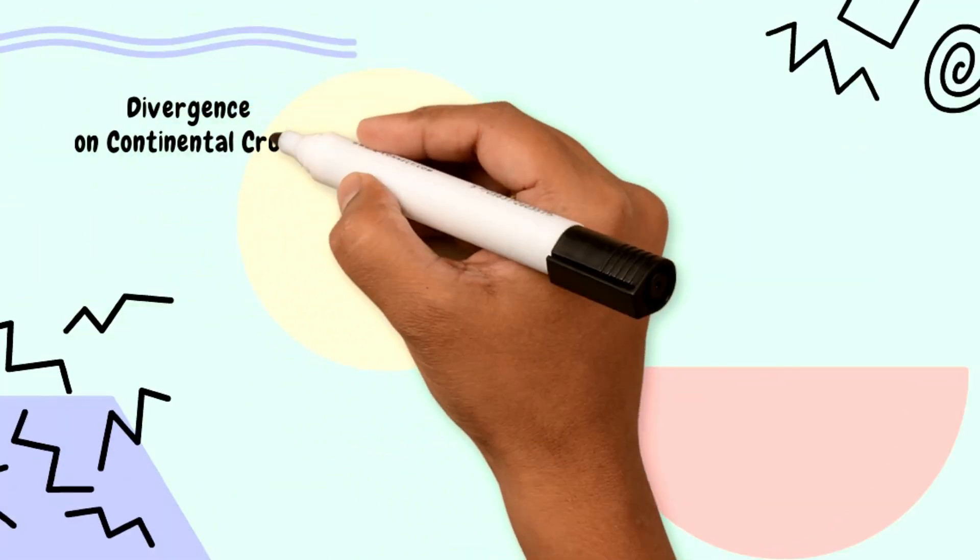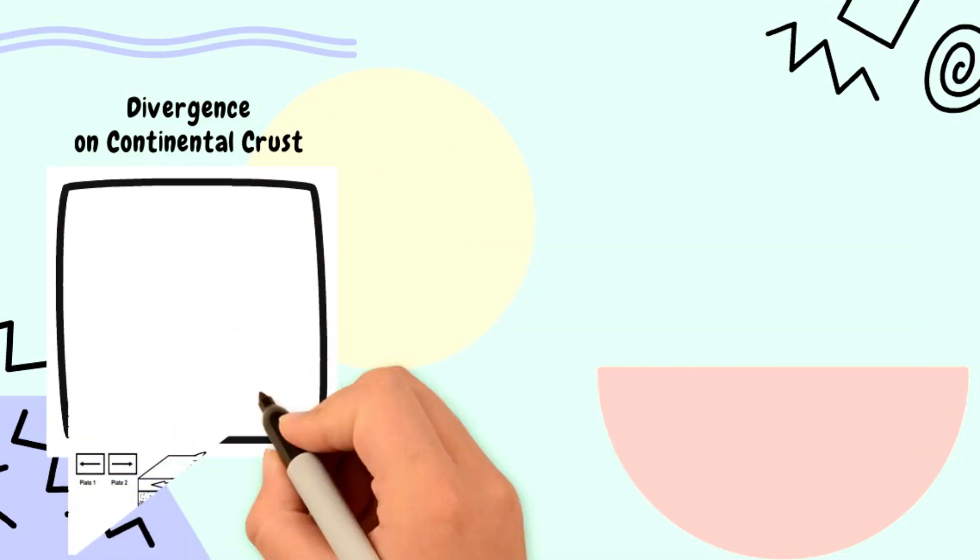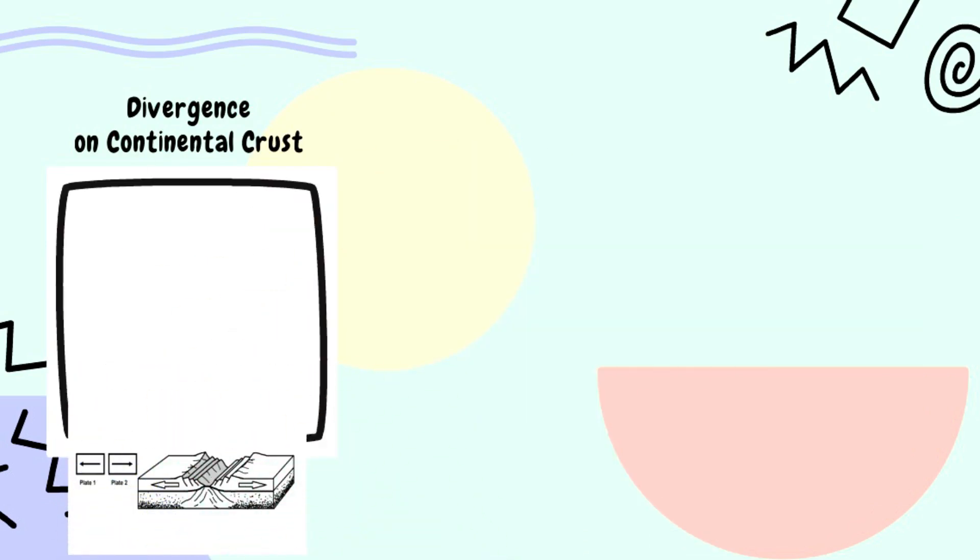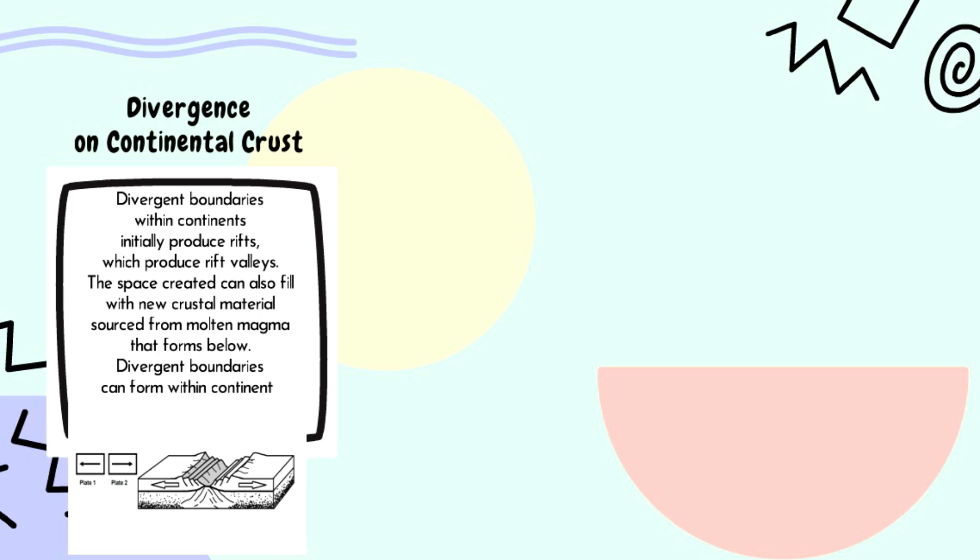Divergence on Continental Crust. Divergent boundaries within continents initially produce rifts, which produce rift valleys. The space created can also fill with new crustal material sourced from molten magma that forms below. Divergent boundaries can form within continents but will eventually open up and become ocean basins.